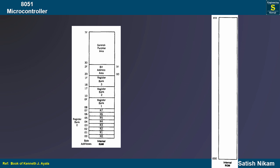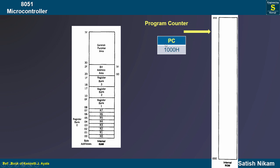The microcontroller will execute this program step by step, so there must be a register that tells the microcontroller which instruction is to be executed next. For that purpose, we have one special function register and that is the program counter — in short, we call it PC — which holds the address of the memory location where the code to be executed is stored. Let us consider the content of PC is 1000H; after completion of the present instruction, the next instruction code is present at memory location 1000H.